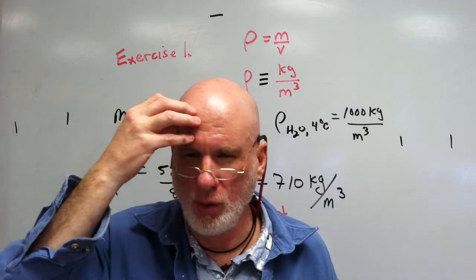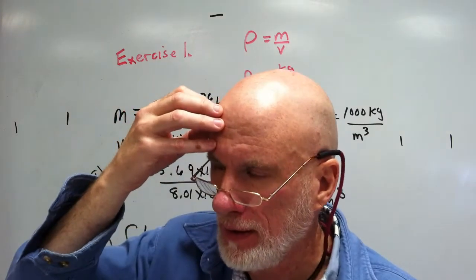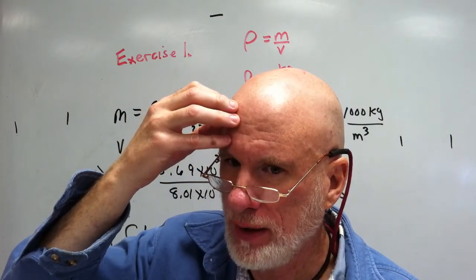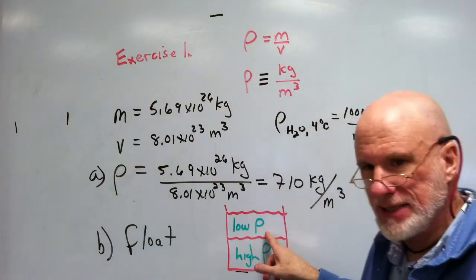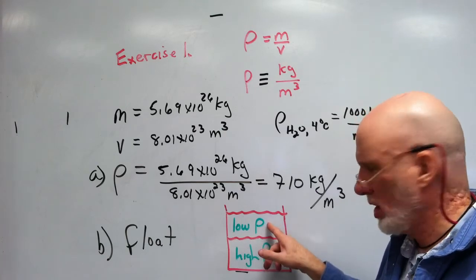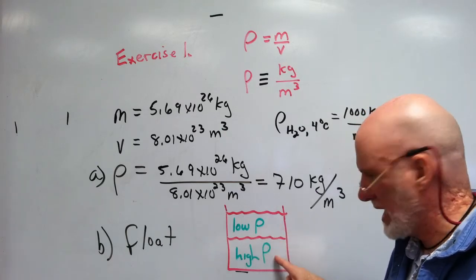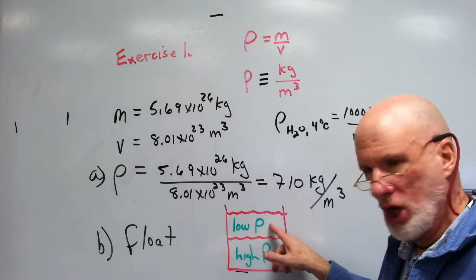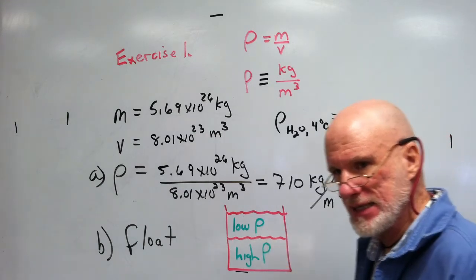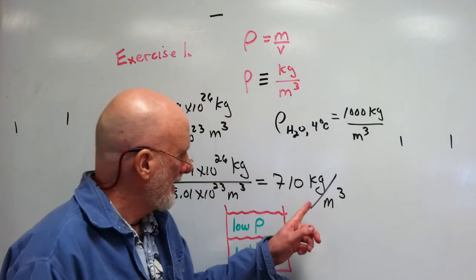This is the rule. Are you ready? Rule in fluid mechanics, fluid statics: low density floats on high density. Low density floats on high density. That's rho, means density. Low density floats on high density.